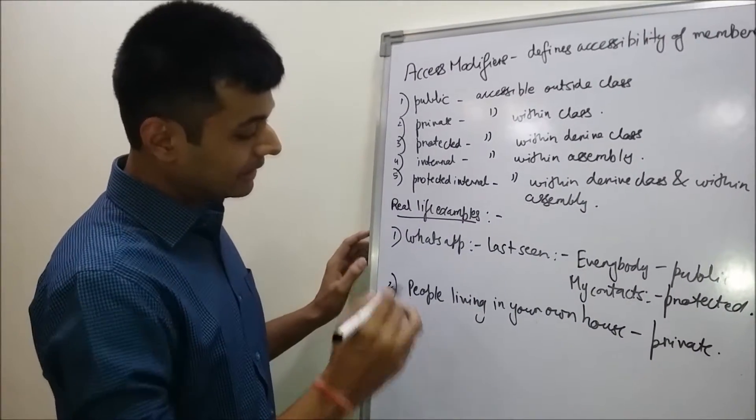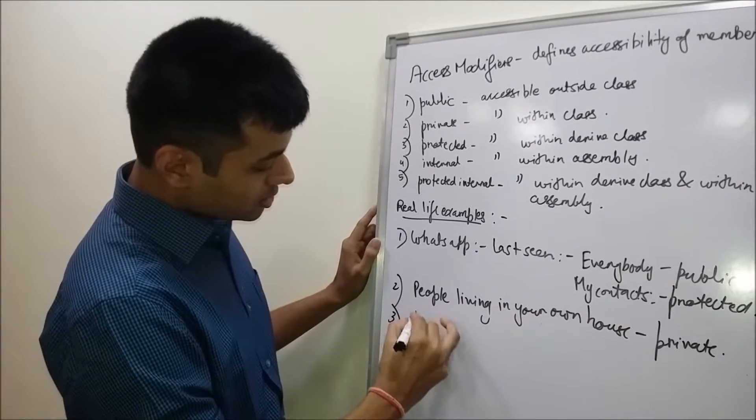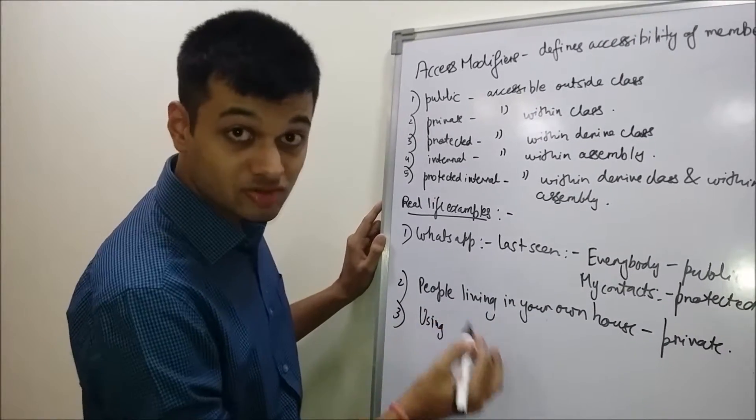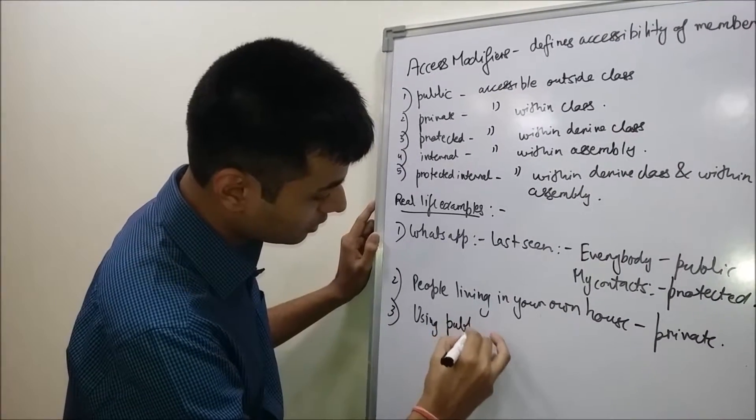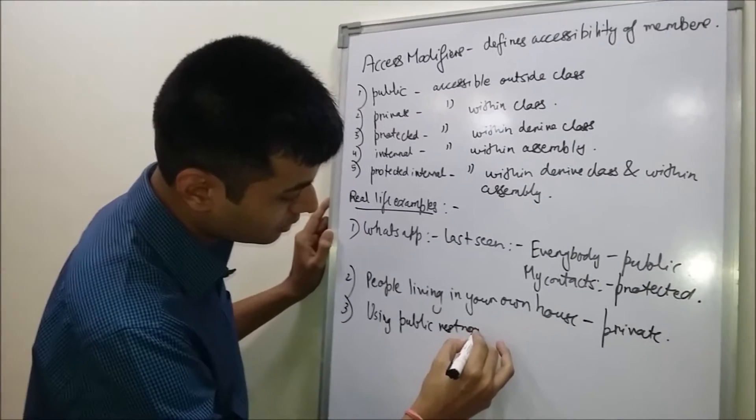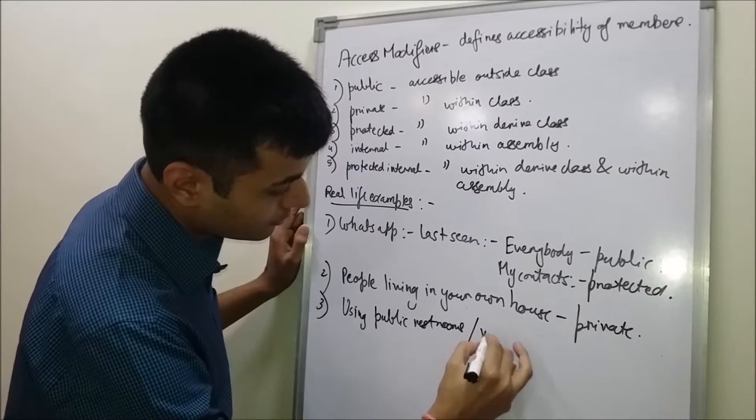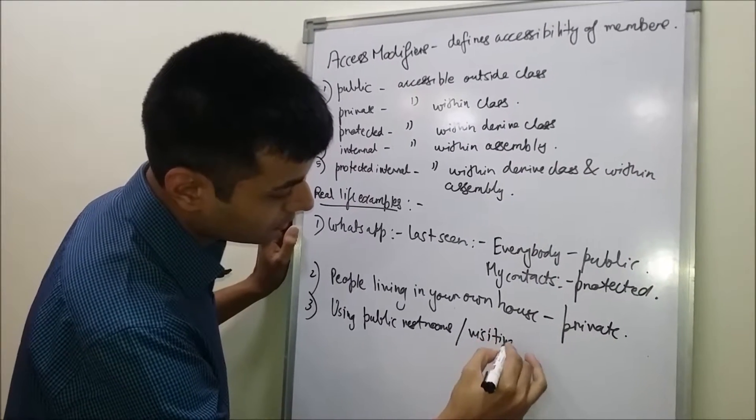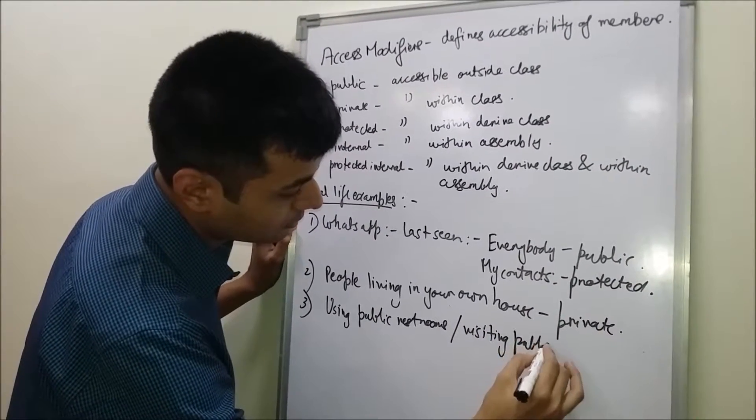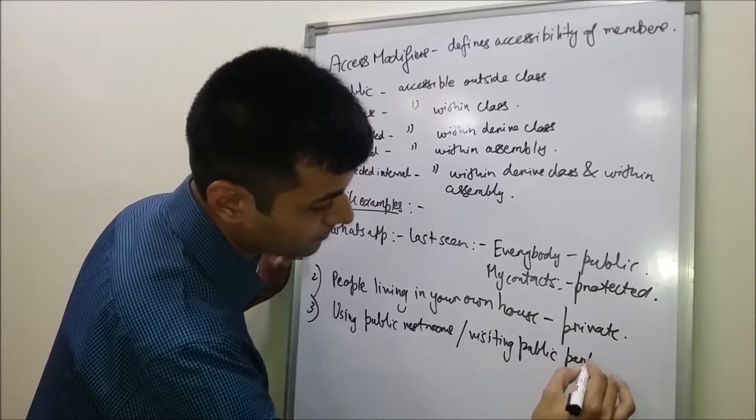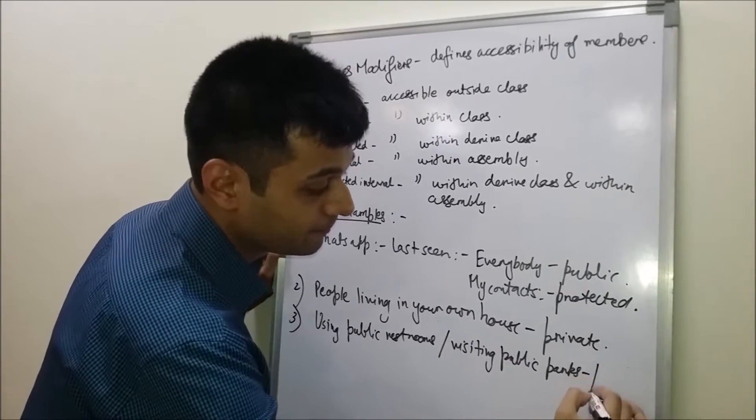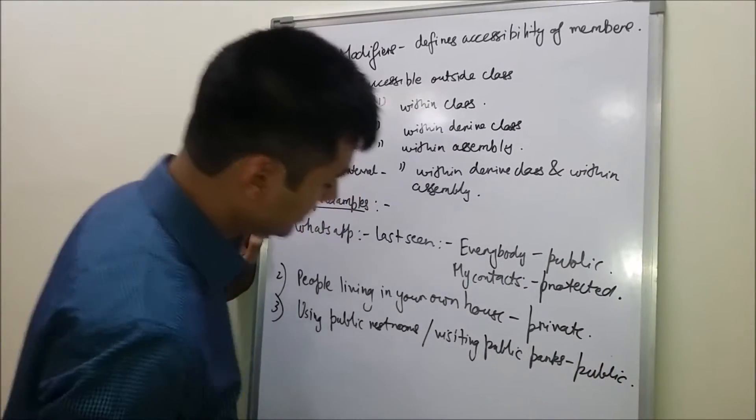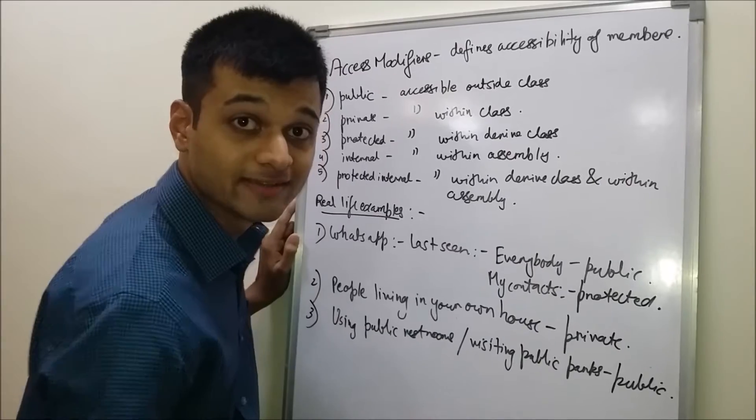The third example we can take is using public restrooms or visiting public parks. This can be an example of public modifier. Everyone is able to access these two things.